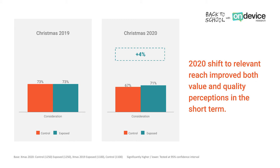However, these learnings were applied in 2020, and what we actually saw there was a four percentage points increase in consideration. And if you look at the size of this campaign, it was pretty large — towards 10 million people. What that actually meant was that by applying these learnings, 400,000 extra people were likely to purchase that brand in the end. So it's a fantastic result for the advertiser and a significant return on investment.